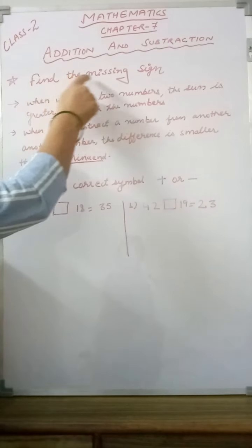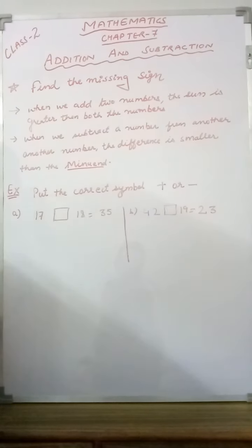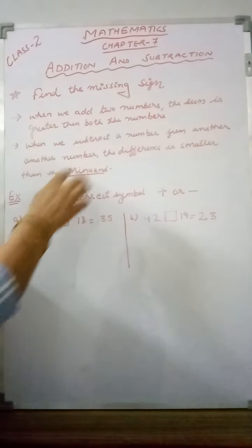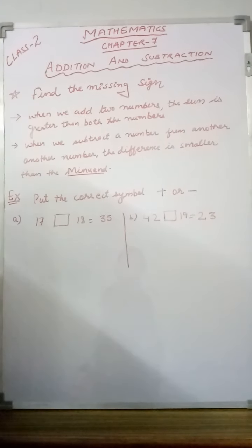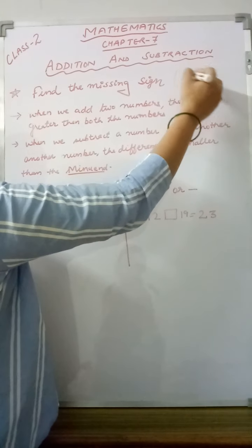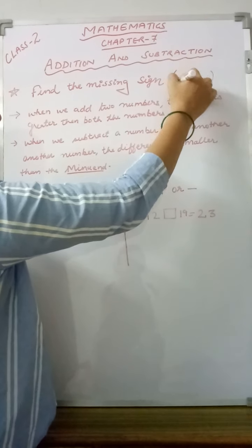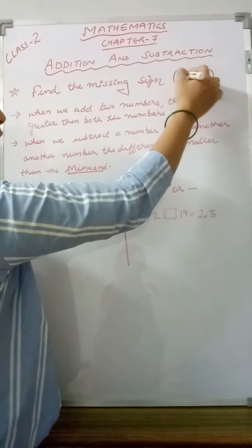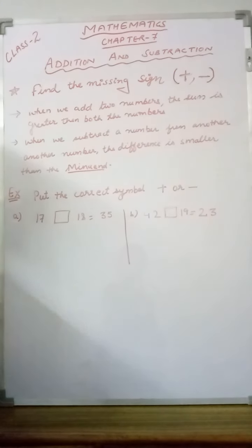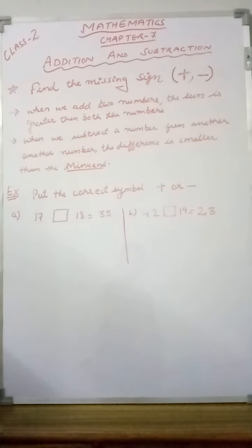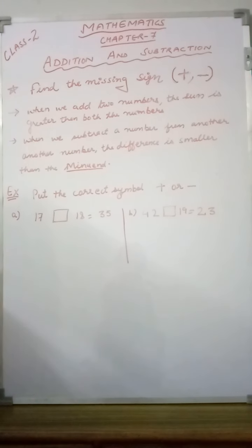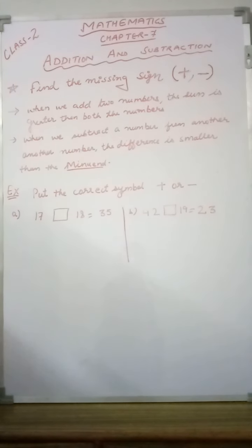My today's topic is find the missing sign. What are the signs? The mathematical operations. Mathematical operations include plus and minus. Multiplied and divide are also there, but for now I have explained only addition and subtraction. So these two signs are missing in the questions. You have to find out the missing signs. Let's see how we find the missing signs.